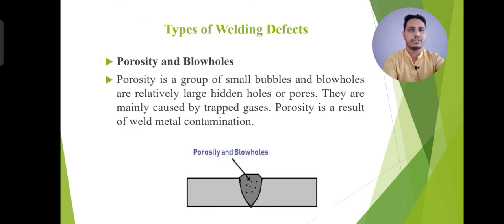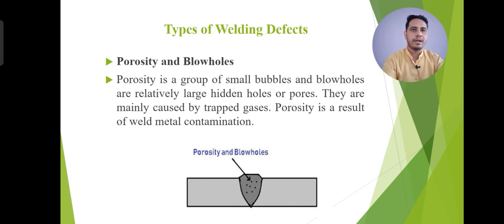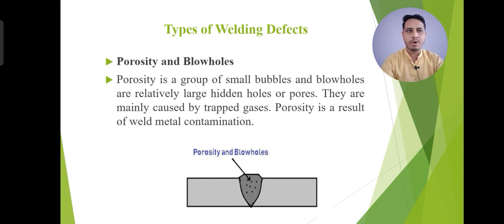This is the basic diagram of porosity. Porosity is a group of small bubbles, and blowholes are relatively large hidden holes. They are mainly caused by trapped gases, and porosity is a result of weld metal contamination. This arrow shows the bubbles, porosity, and the blowholes. Porosity definitely reduces the strength of the weld bead. This is the most common defect. Causes include high welding current, dirty base metals, electrodes with damp and damaged coating, and a welding atmosphere containing excess hydrogen, nitrogen, or oxygen. Environmental contamination is also totally responsible for porosity defects.